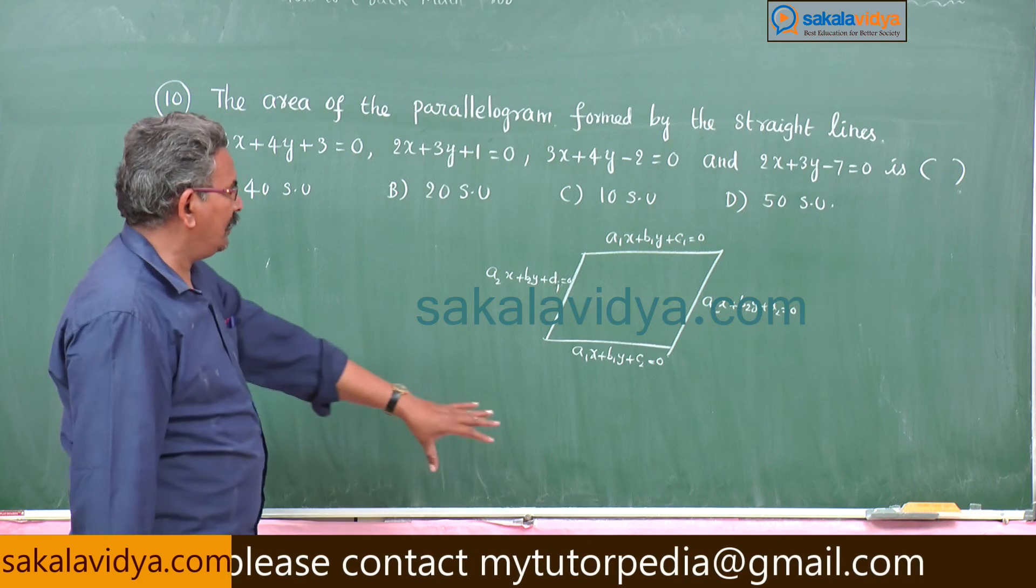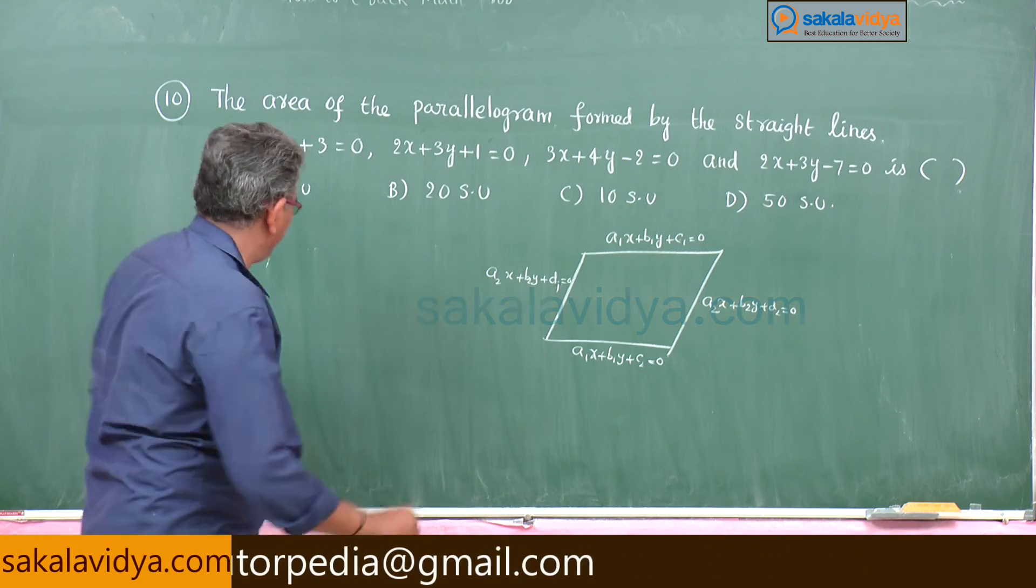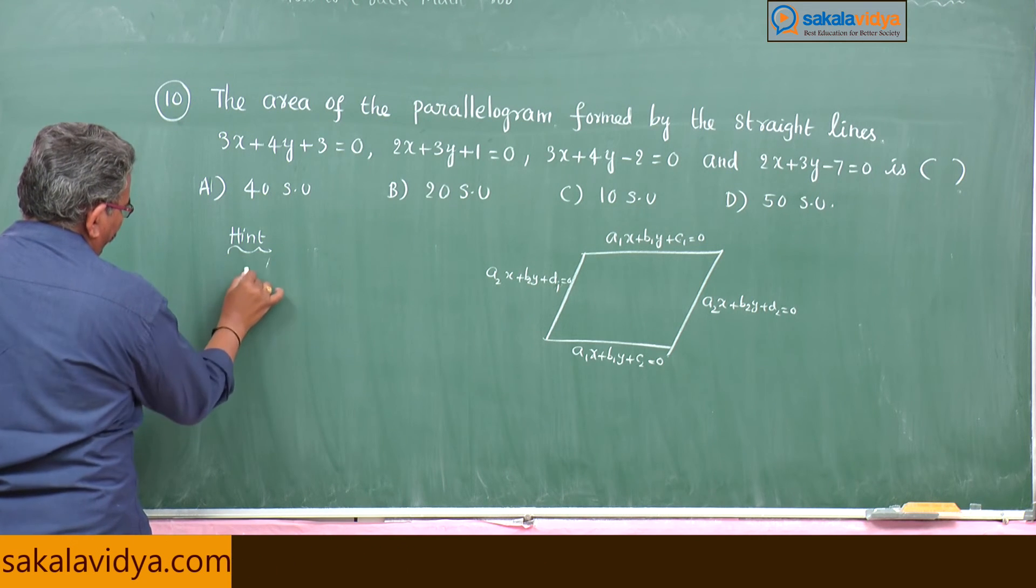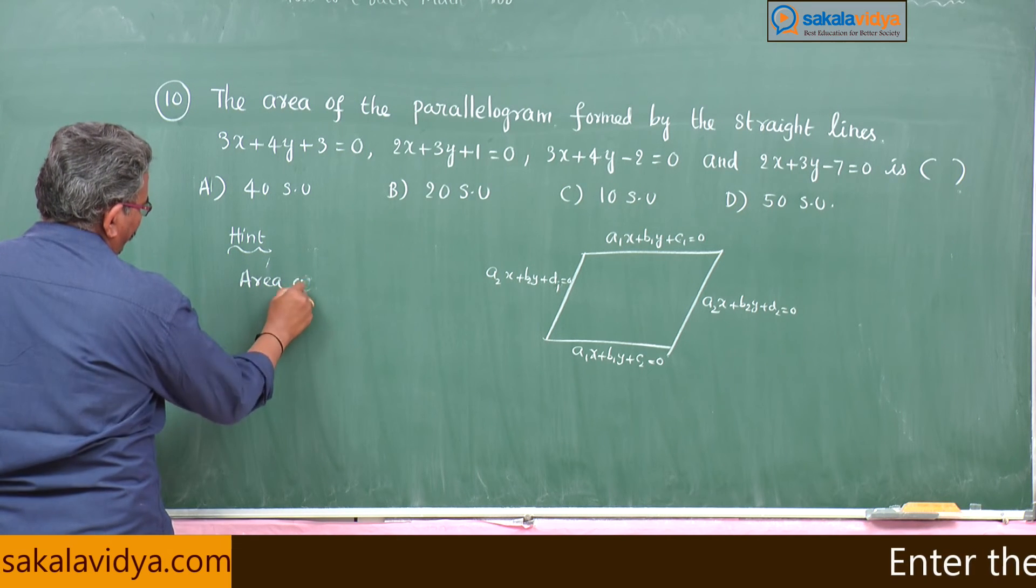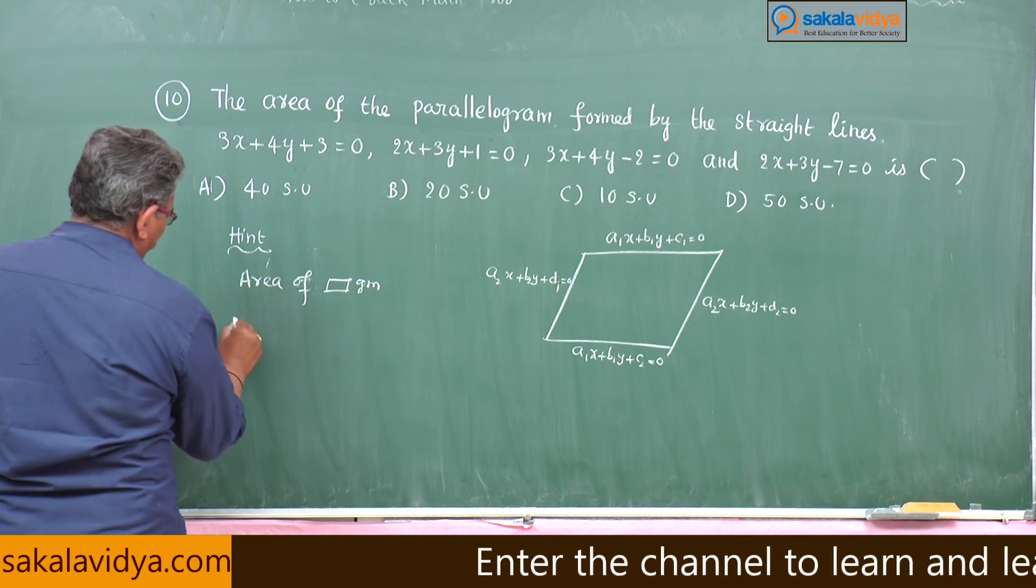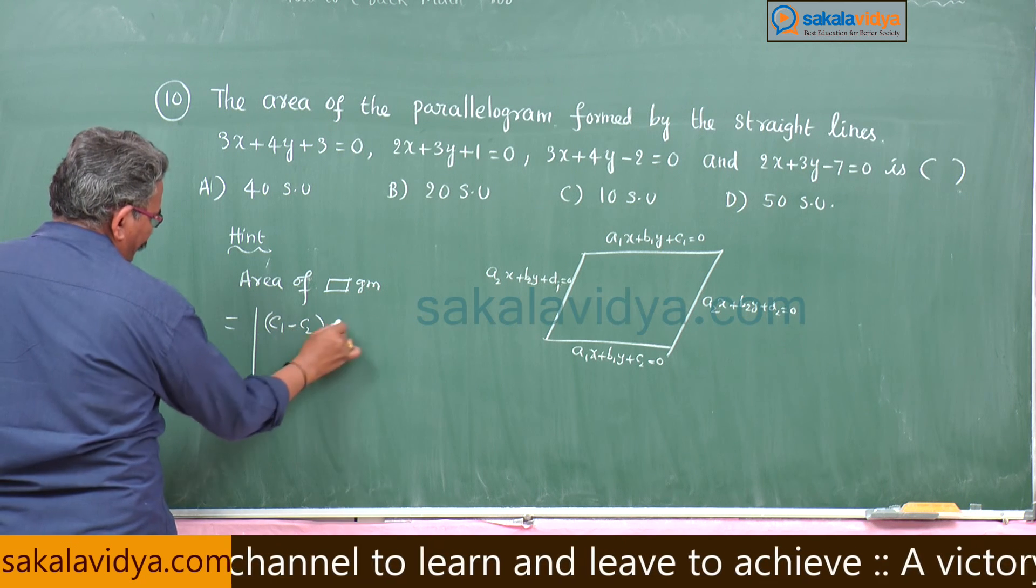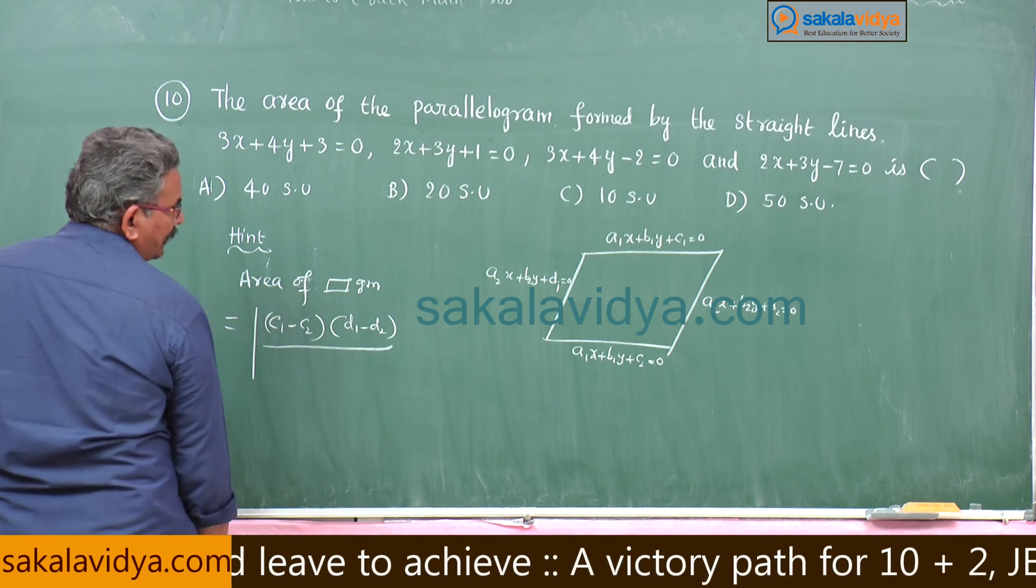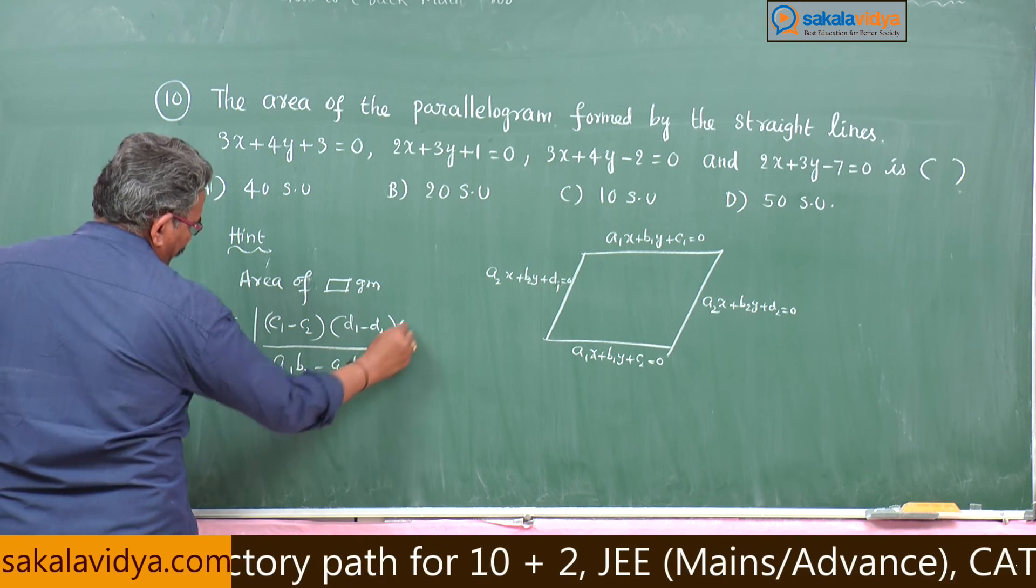Then area of the parallelogram formed by these four lines is given by the shortcut: area of parallelogram equals modulus of c1 minus c2 into d1 minus d2 divided by a1b2 minus a2b1.